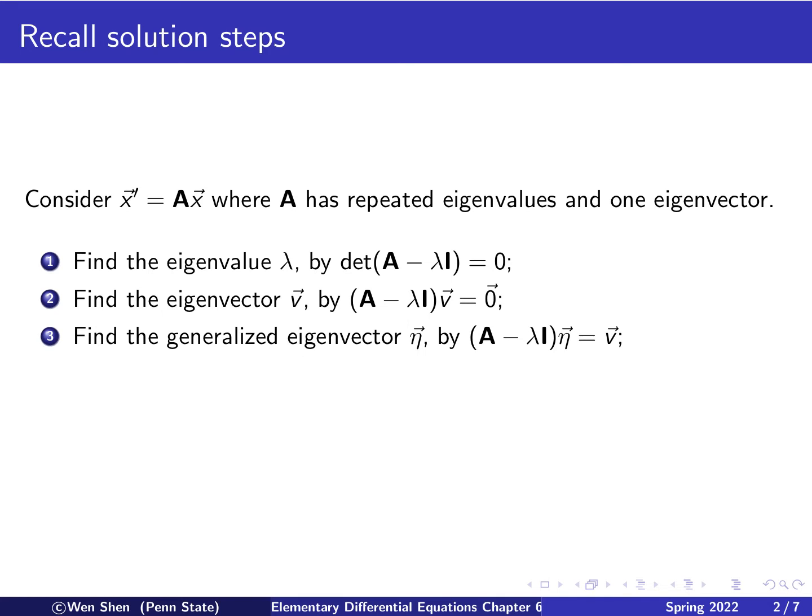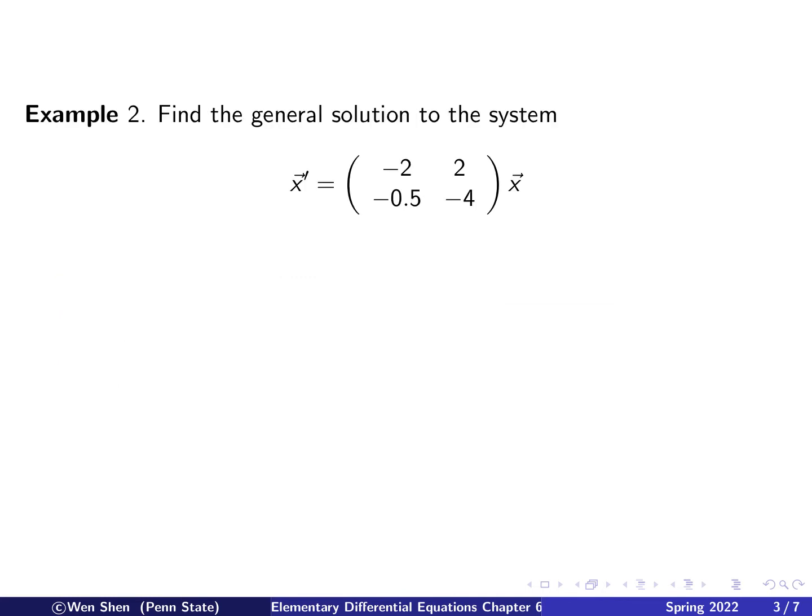And then you need to find another one called the generalized eigenvector, which satisfies this equation here, not with 0, but with V, the previous step solution, the eigenvector here, on the right-hand side. And then use all the information here in step 1, 2, and 3, we can form the general solution, which takes this form. So here is one solution, as usual, times c1, and then the second solution, that we call the Z2, takes a bit complicated form. It is this Z1 here times the T, but that's not enough. And then you have e to the lambda T times eta, which is the generalized eigenvector.